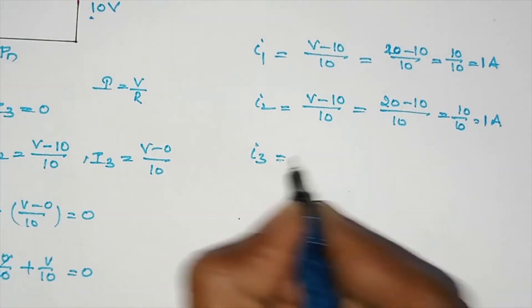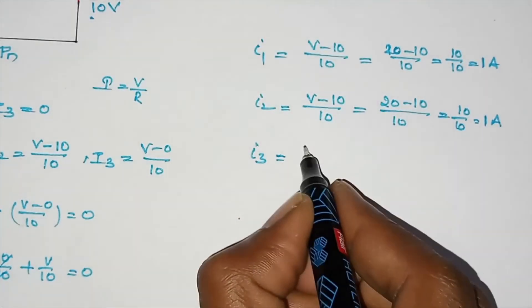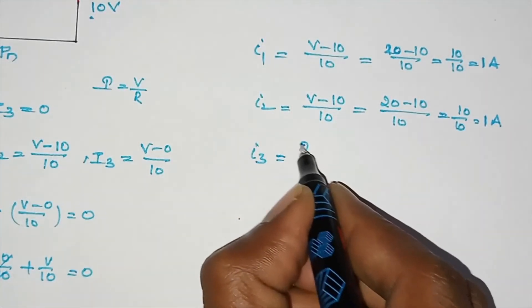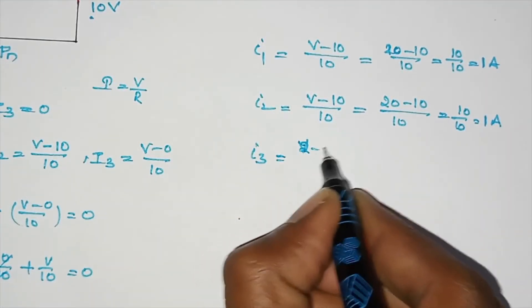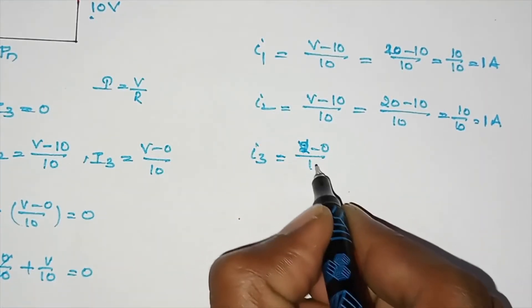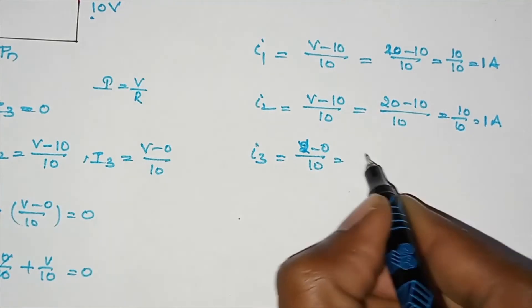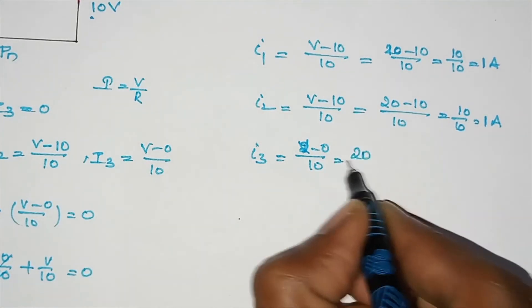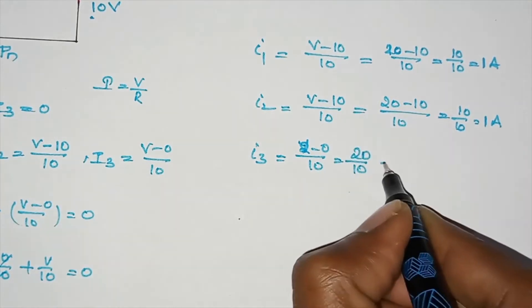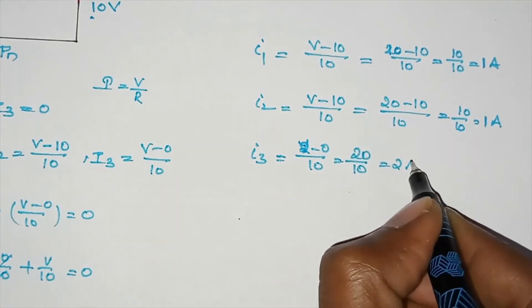I3 is equal to V minus 0 by 10 — V minus 20 by 10 — is equal to 2 amperes.